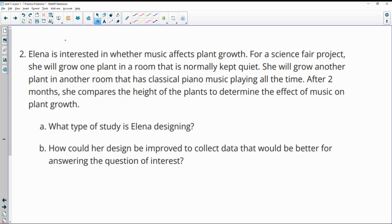Number two, Elena is interested in whether music affects plant growth. For a science fair project, she'll grow one plant in a room that's normally kept quiet. She'll grow another plant in another room that has classical piano music playing. After two months, she compares the height of the plants. So in this, she's got two different rooms—normally quiet and then one that's classical piano music playing. She's changed something in each room to directly influence what's going on. So this is experimental.